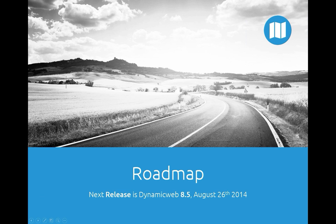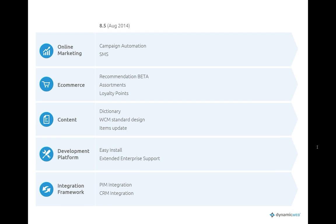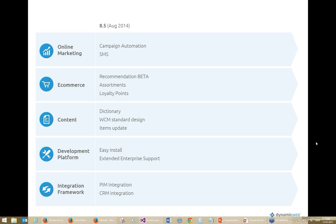That brings us to the roadmap for 8.5, due last Tuesday in August. Starting from the top: in online marketing we'll keep adding new functionalities to campaign automation, like the resend functionality just shown, abandoned shopping cart, and so on. We'll also add an SMS/text module to the Dynamic Web backend — it was available a couple of years ago, was requested to be updated, and will be back in the backend.